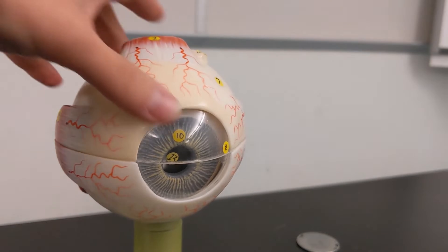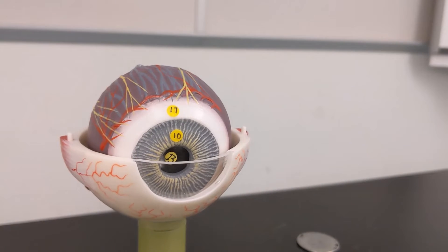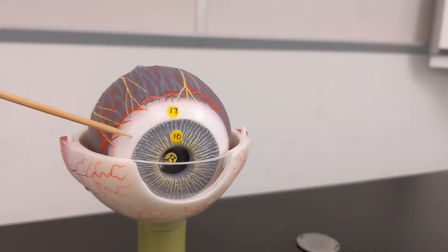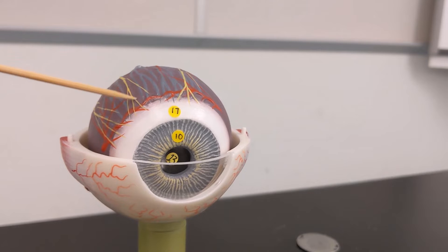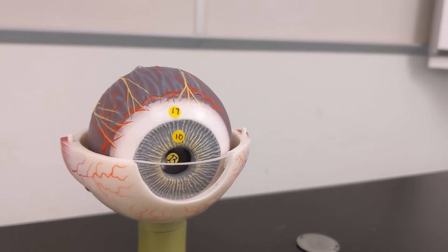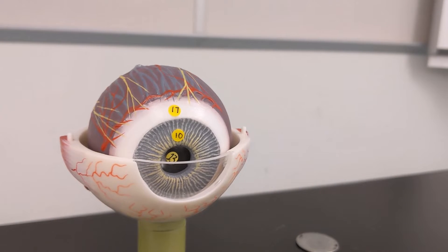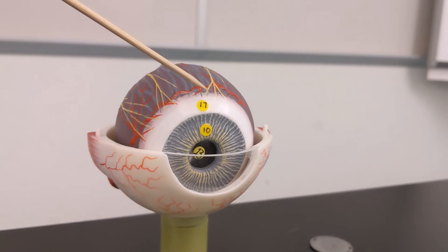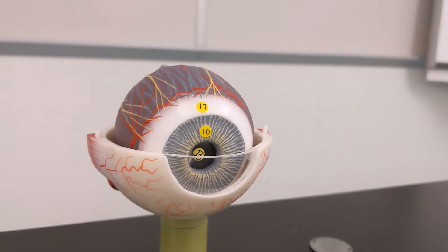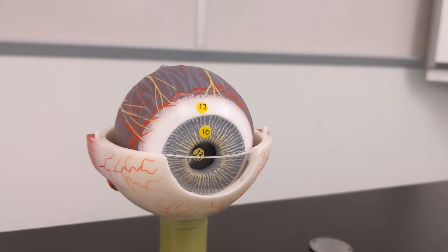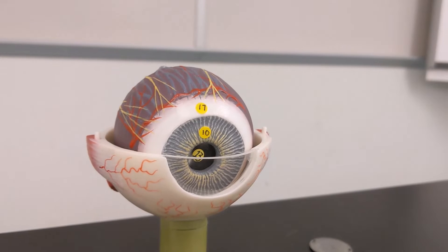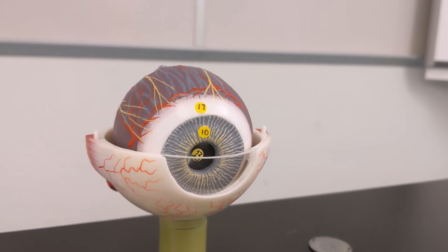Alright, so if we take off his lid, tell me what that is, what the purple area is, and what layer are they both a part of. So the white thing is the ciliary body, the purple area is the choroid, and they are both a part of the vascular tunic.